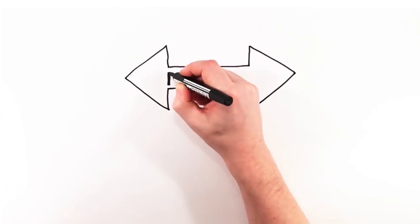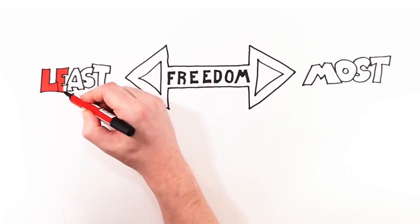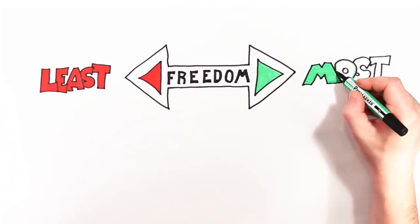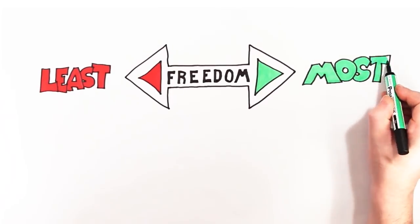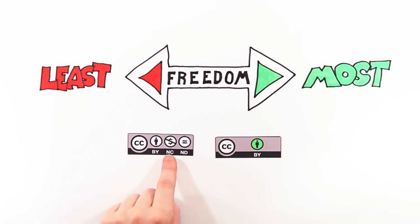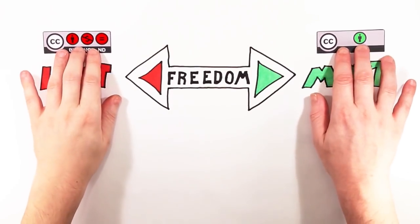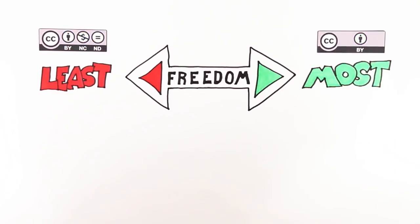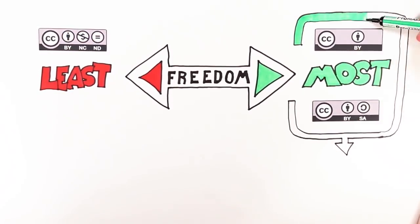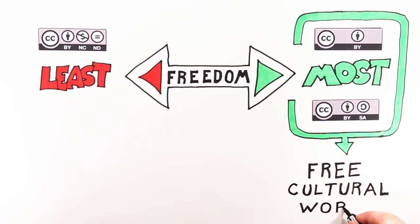Here are the six combinations that make up Creative Commons licenses. The difference between them is how many rules apply when someone wishes to use your work. The Attribution license allows re-users the most freedom, and the Attribution Non-Commercial No Derivatives license allows the least freedom. The Attribution license and Attribution Share Alike licenses are sometimes referred to as Free Cultural Works approved licenses.